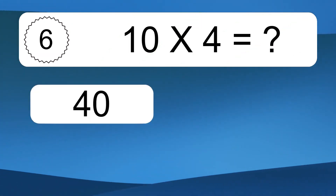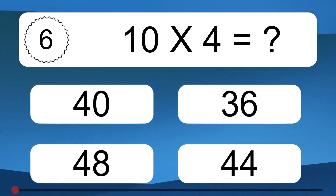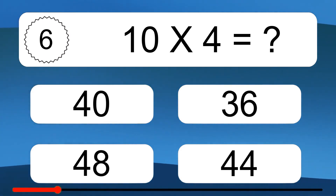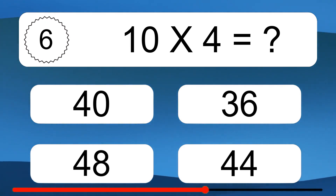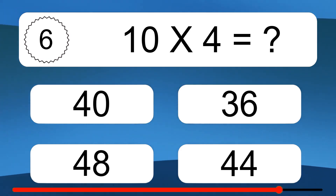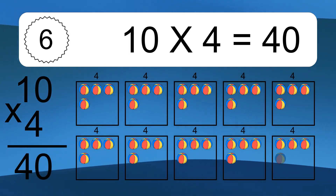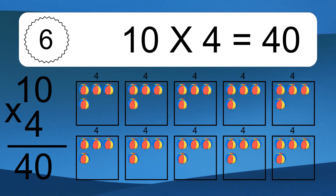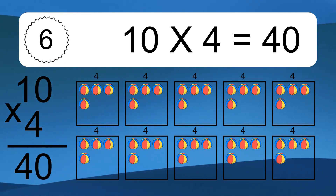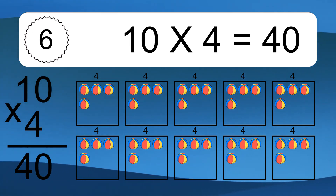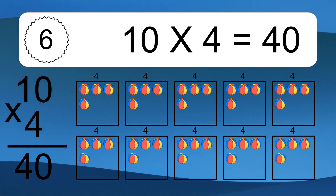10 times 4 equals what? 10 times 4 equals 40. We have 10 boxes, and each box has 4 colorful balls inside. If you count all the balls in all the boxes together, you will have 10 times 4 balls. This equals 40 balls.